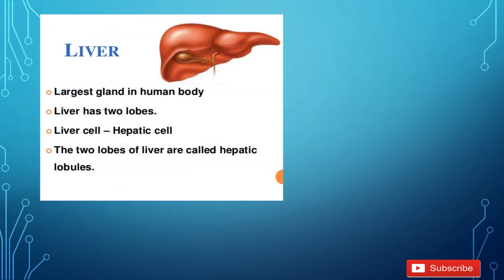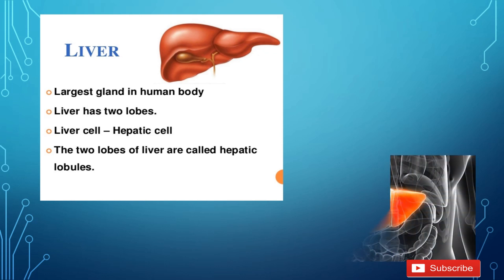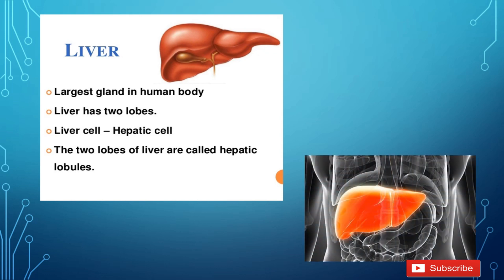Liver. The liver is the largest gland of the body. It has two lobes and the liver cells are called hepatic cells. You can see here the position of the liver.